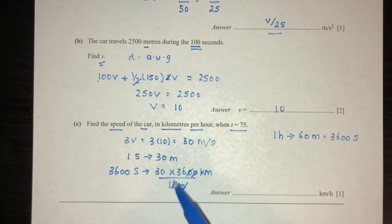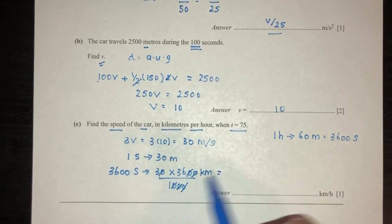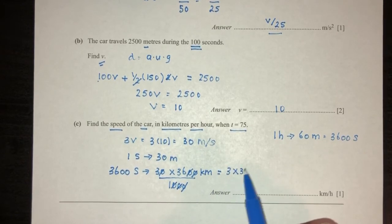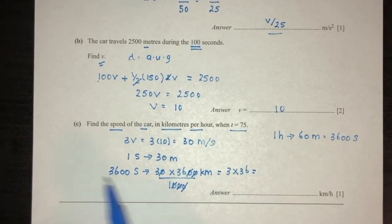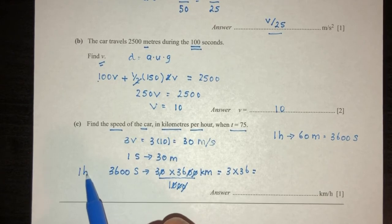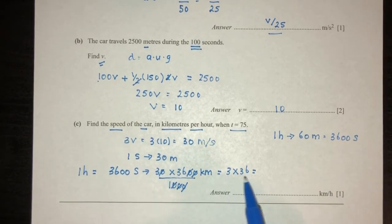So the zeros cancel out. So you will have 3 times 36 for your answer. So in 1 hour, 3,600 seconds is equal to 3 times 36. And that should give you 3 times 6, that is 18. 3 times 3 is 9, that should be 10. So your value will be 108 km per hour.